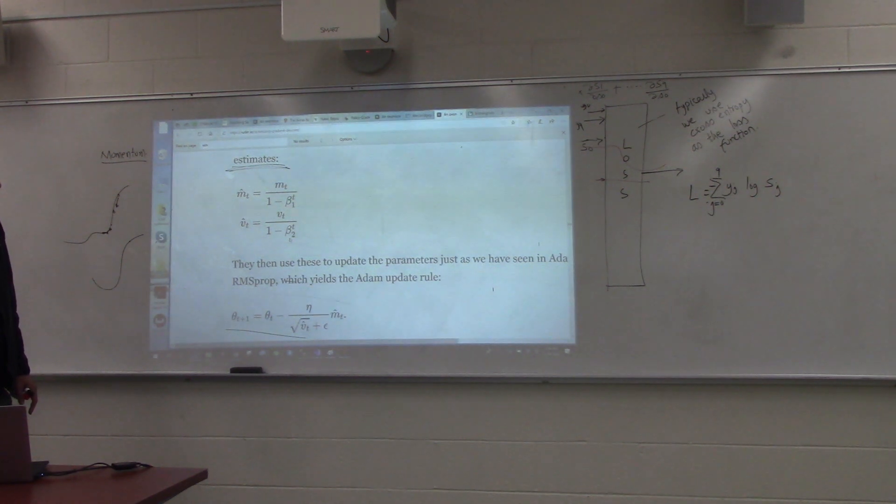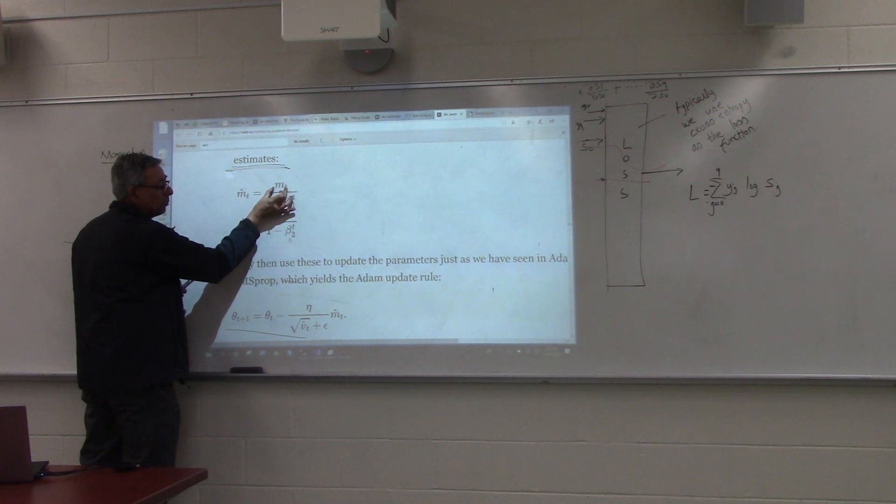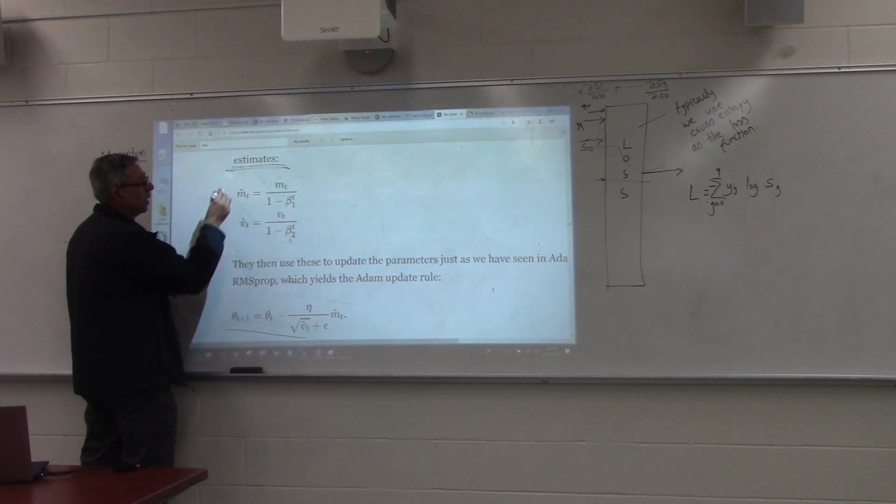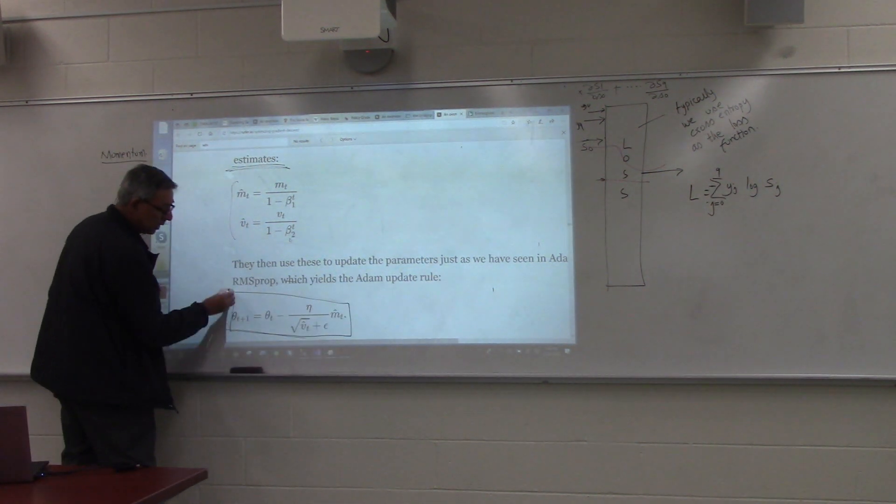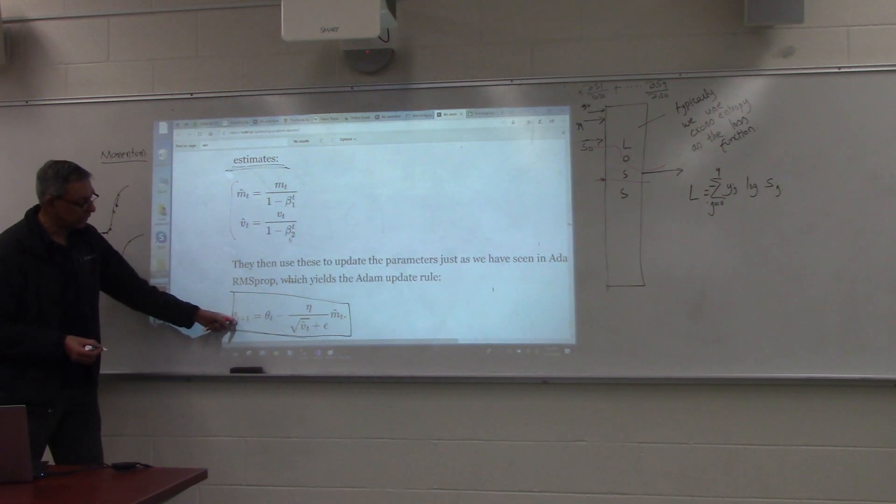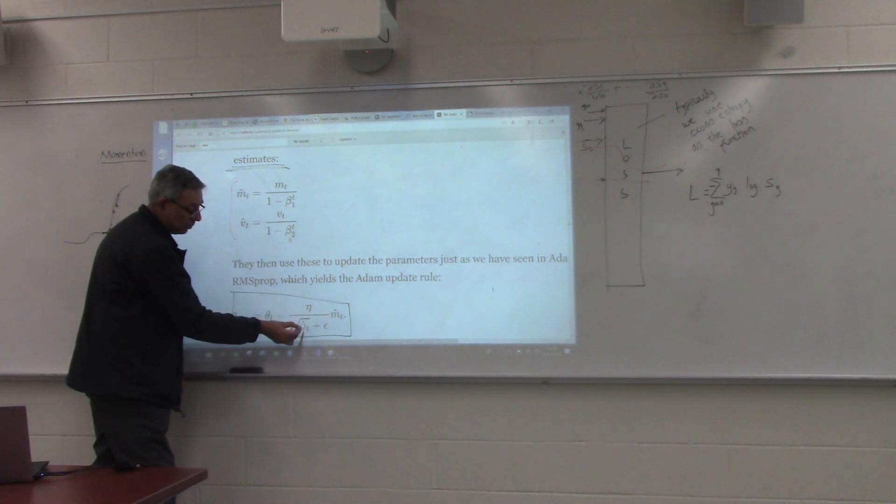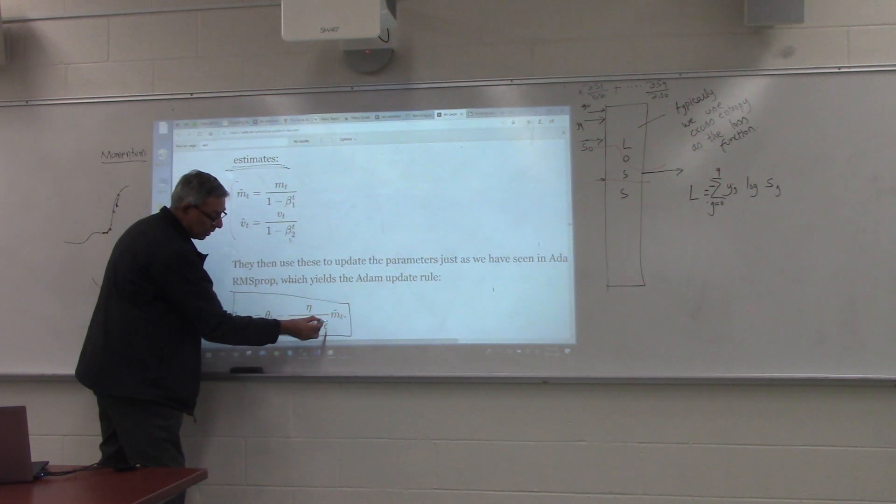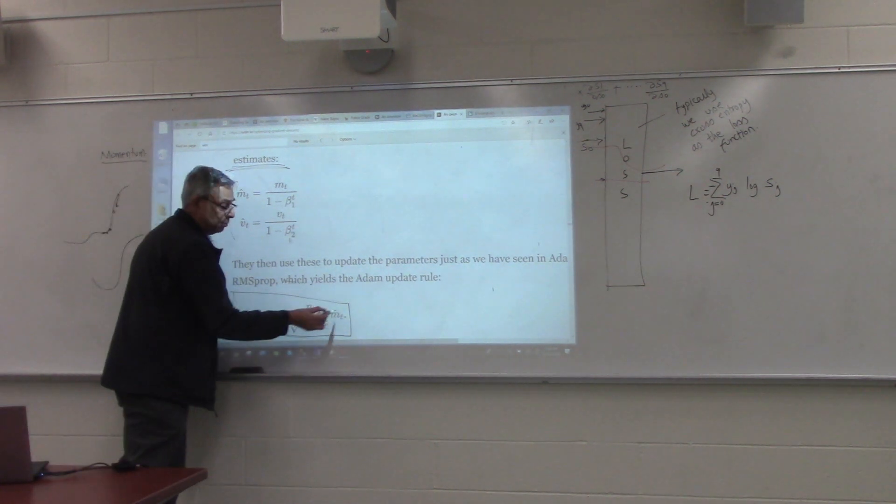Then we further, based on whatever mt we calculated, we further adjust it by the value of beta 1 a little bit, similarly for the vt. And then take a look at our final expression in Adam. It's very simple. Each time we update the parameter, it's the current value minus the learning rate divided by square root of the vt. Again, some epsilon over here so that the denominator doesn't go to zero, multiplied by mt.